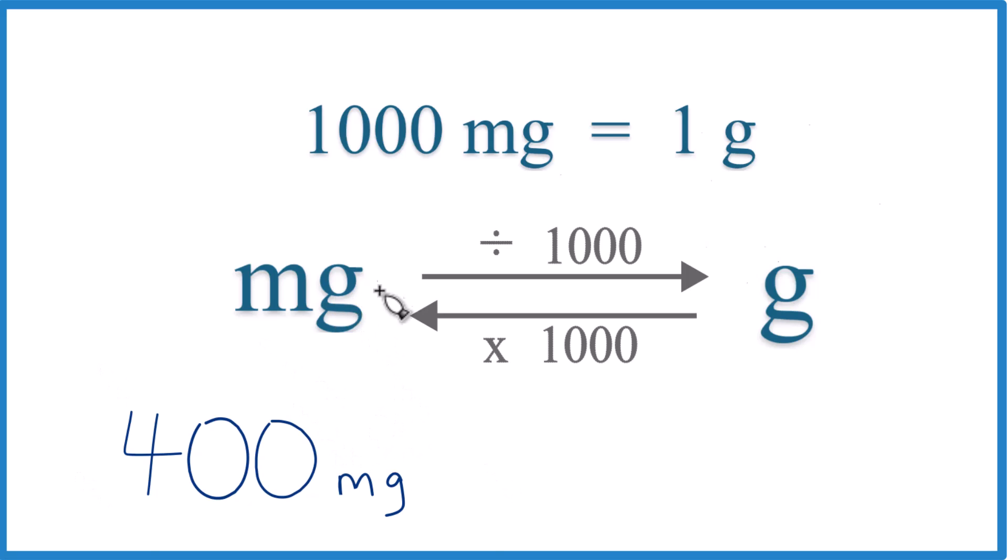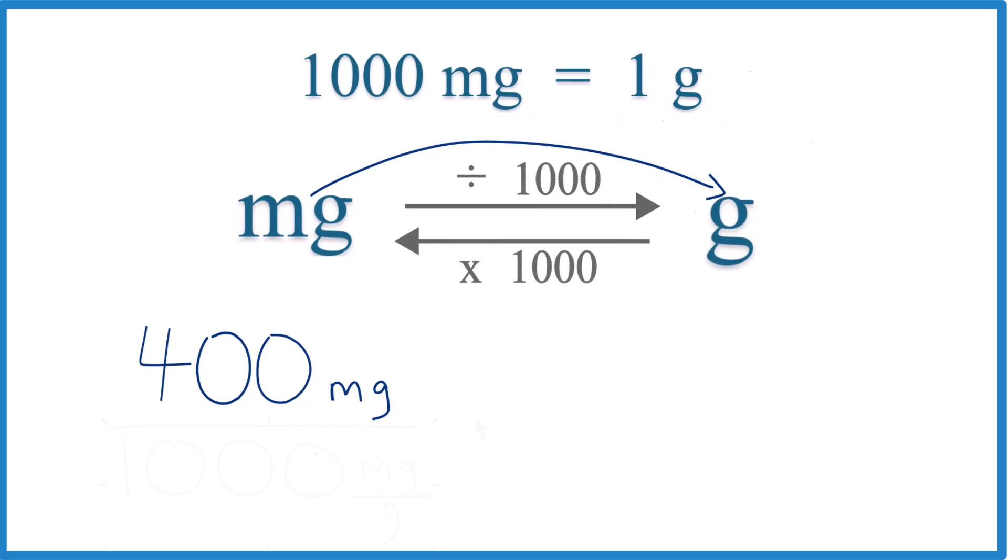We have 400 milligrams here, so we're going from milligrams to grams. We're going to divide by 1,000, like this. So essentially we're just dividing 400 by 1,000, that'll get our milligrams to grams.